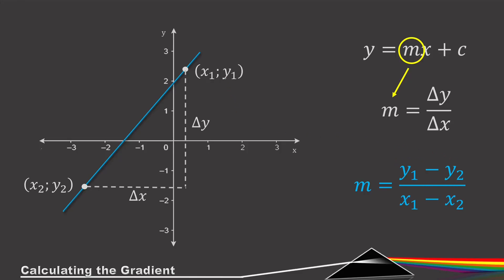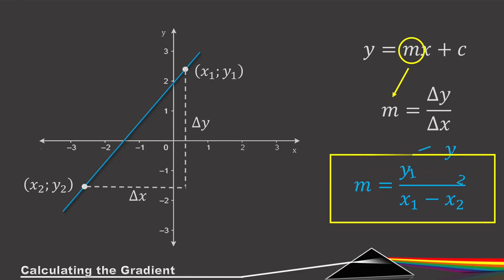This takes the y value of one point and subtracts the y value of the other. Something important: you can also write (y2 − y1) / (x2 − x1). It doesn't matter which coordinate you substitute in first. The only rule is that if you choose y1 first, you must put x1 first as well, and if you use y2 first, you must put x2 first.